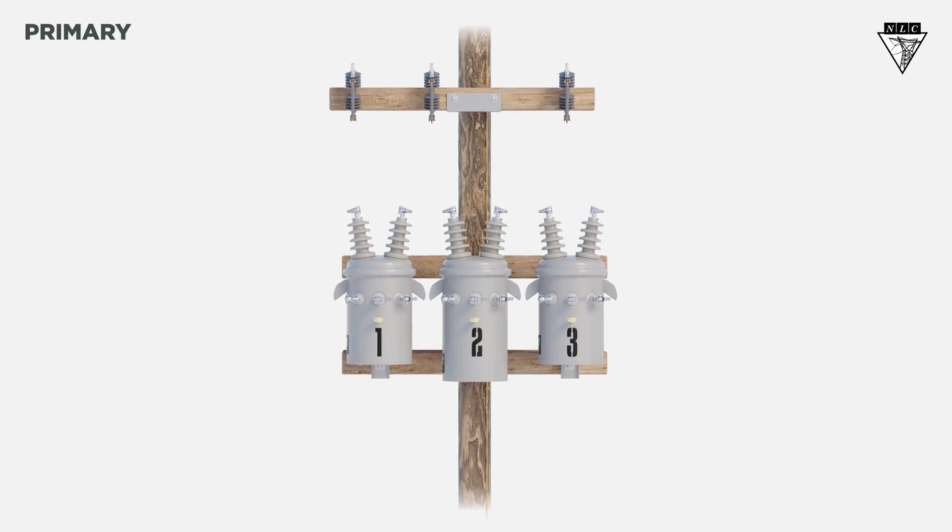Let's begin on the primary side. Start by connecting the H2 bushing of the first transformer to the H1 bushing of the second transformer. Connect the H2 of the second transformer to the H1 of the third transformer. Connect the H2 of the third transformer to the H1 of the first transformer.